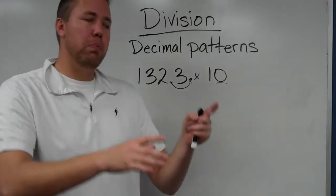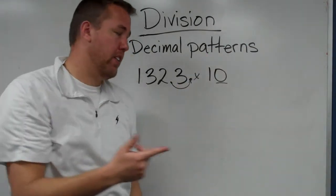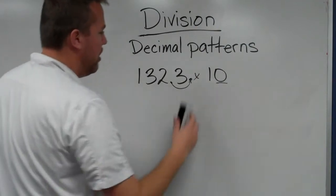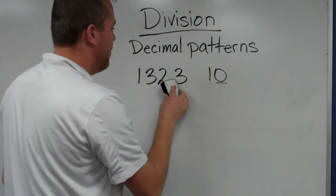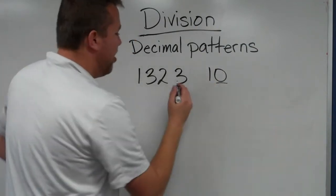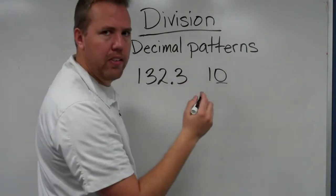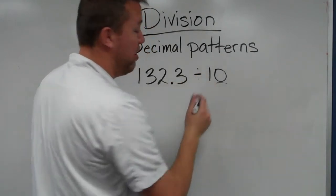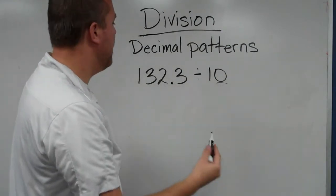So when we are multiplying, we are going to the right. Division being the inverse of multiplication, now we just move it—you're correct—to the left. I should say you're correct, not you're right, because I don't want to mess you up.